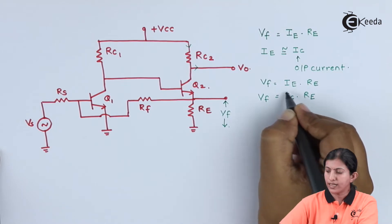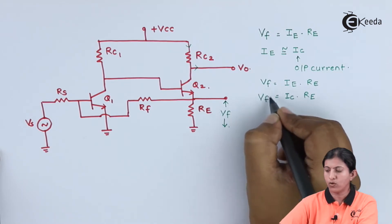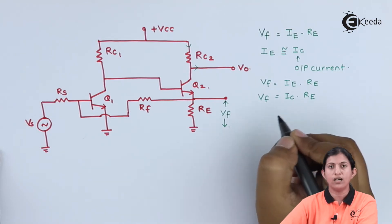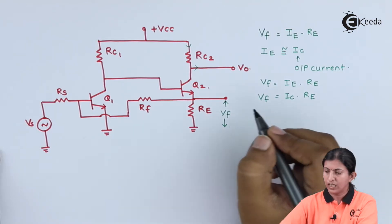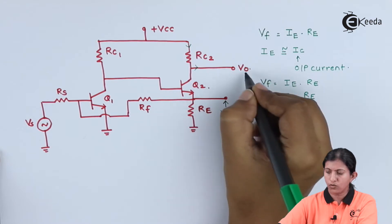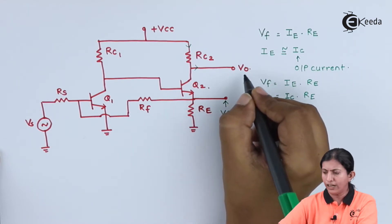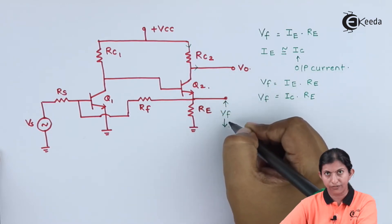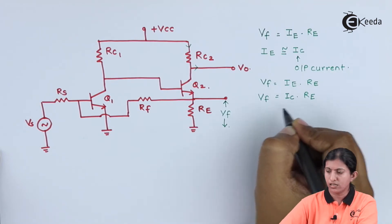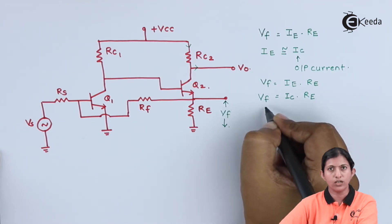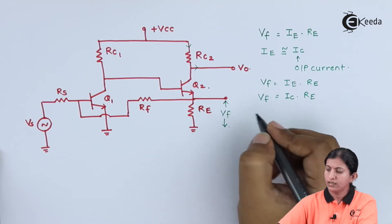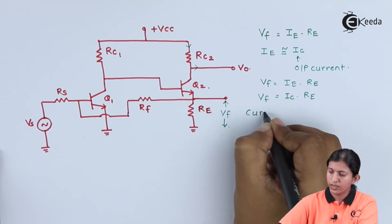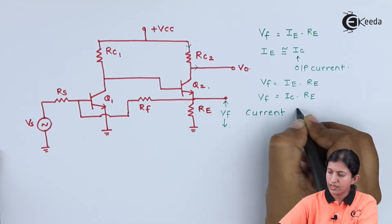If the value of Ic is zero, then the feedback voltage is zero. This sampling is basically current sampling. In this case, if Vo is zero, it does not affect the value of Vf. If the value of Ic changes, the feedback voltage also changes. Hence, this sampling is not voltage sampling, but current sampling.